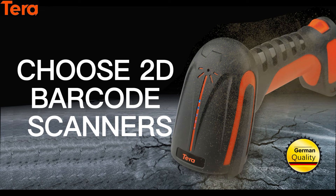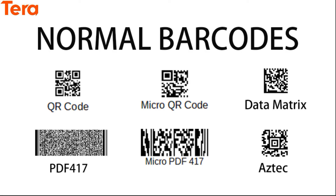Today, we will discuss the topic of how to choose 2D barcode scanners. When choosing the scanners, you need to know what kind of barcodes you will be scanning. For regular barcodes, for example, QR code, micro QR code, data matrix, PDF417, micro PDF417, and Aztec, etc., I would suggest you confirm if the scanner is capable of decoding such types of barcodes before paying for the scanner.